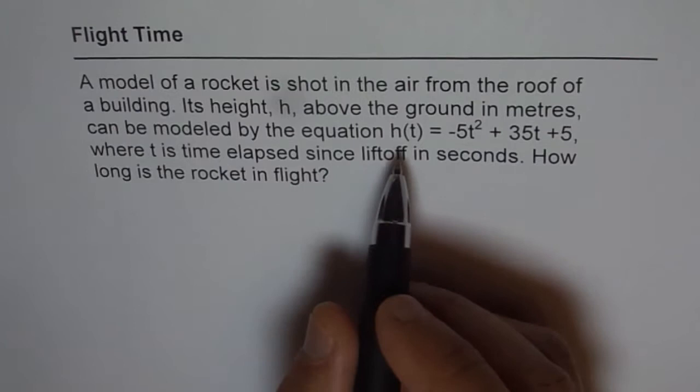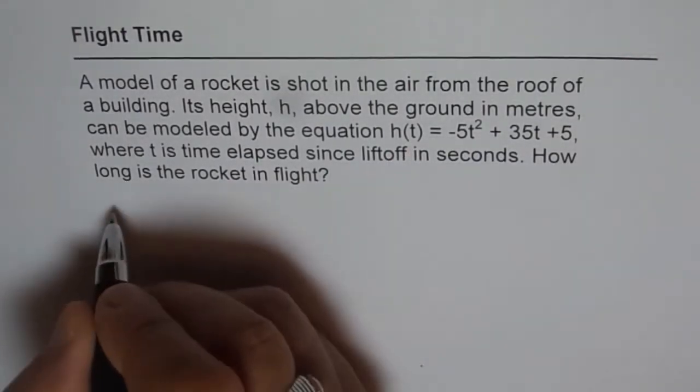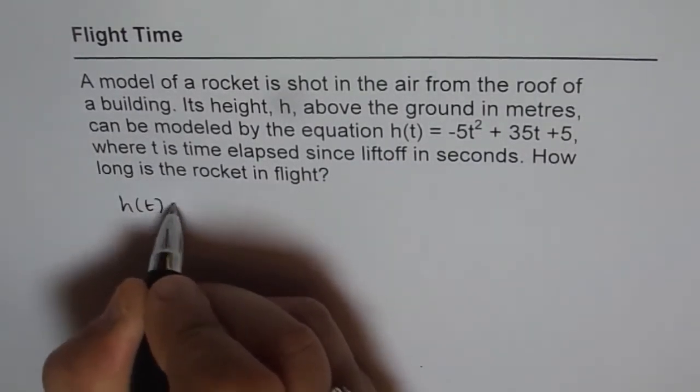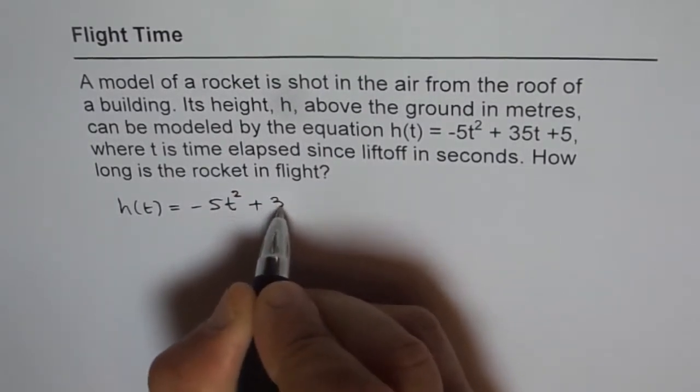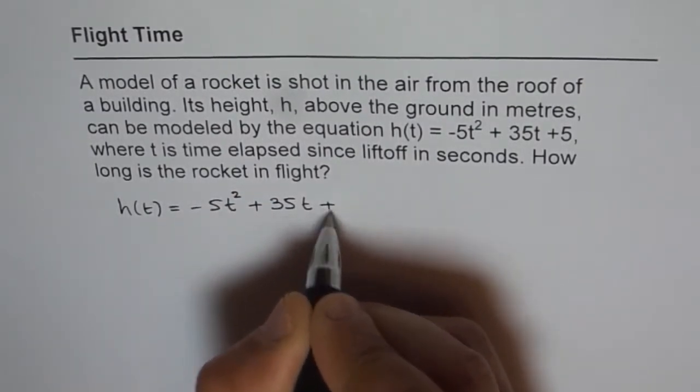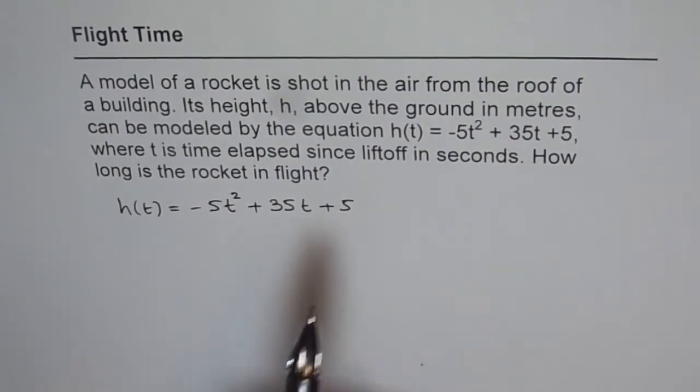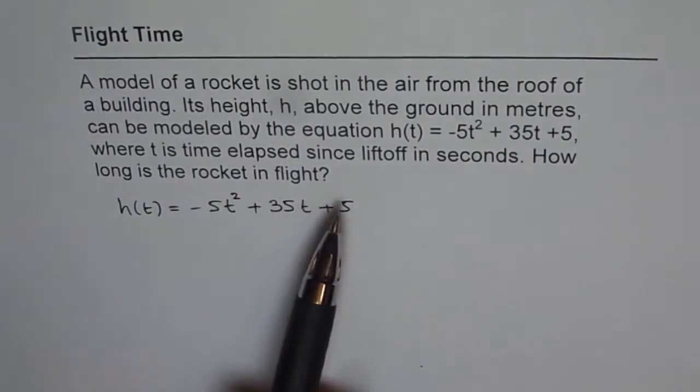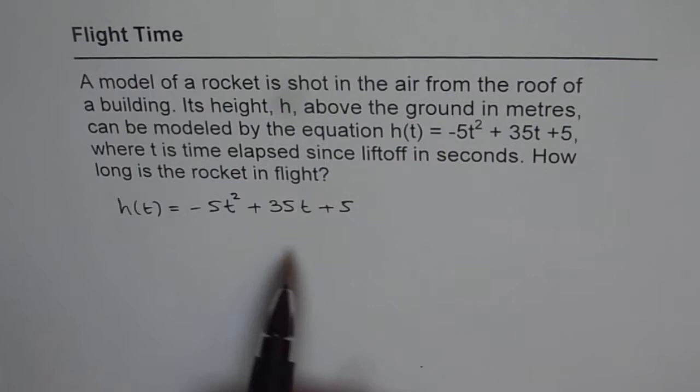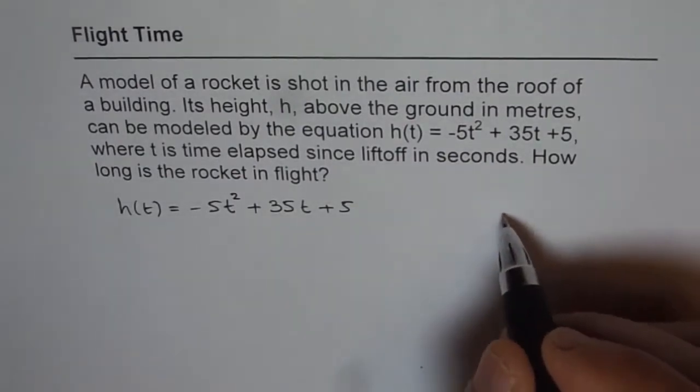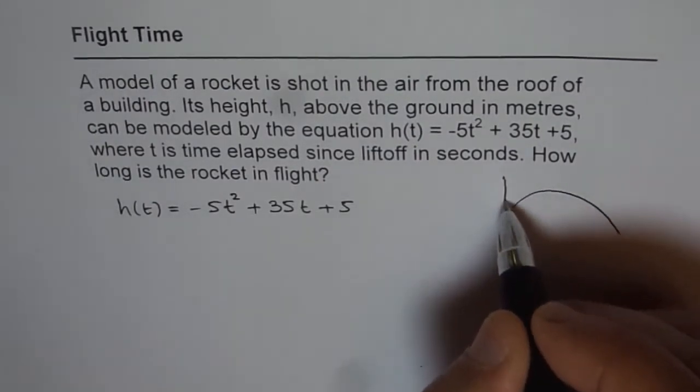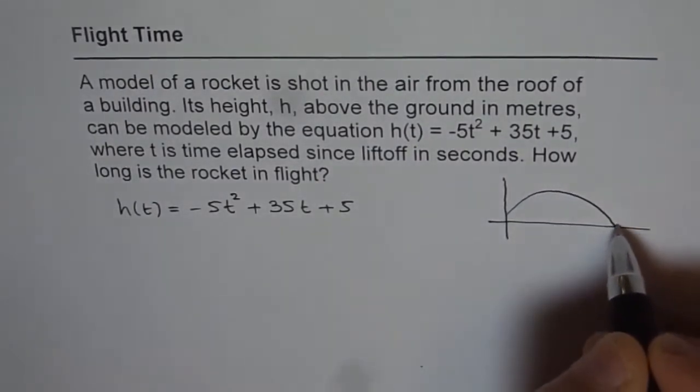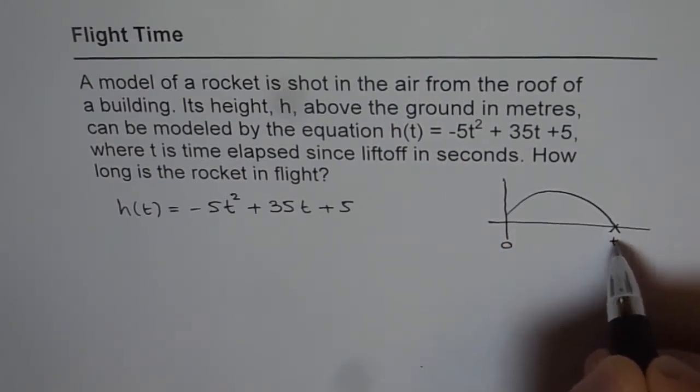Now we are given the equation for the flight which is h(t) = -5t² + 35t + 5. And we are trying to find the time when the flight is in the air. That means since it was launched and it drops to the ground. So that is the time which we are looking for, zero to this time when it hits the ground.